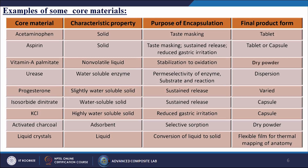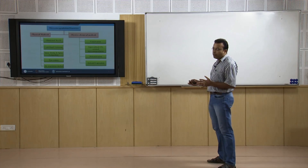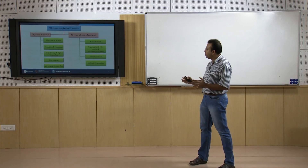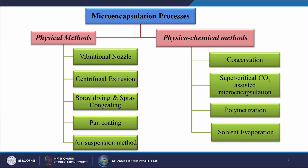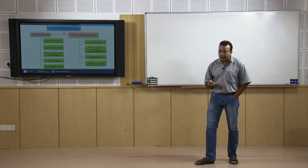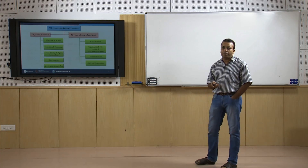We are going to discuss several processes related to microencapsulation. These are divided into two parts: physical methods and physicochemical methods. In physical methods we discuss vibrational nozzle, centrifugal extrusion, spray drying, spray congealing, pan coating, and air suspension methods. In physicochemical methods we discuss coacervation, supercritical carbon dioxide assisted microencapsulation, polymerization, and solvent evaporation.